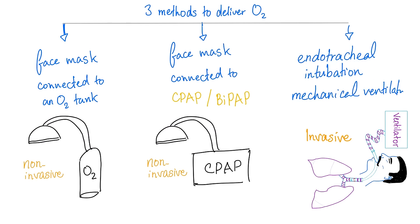First, you have to understand this. There are only three methods to deliver oxygen to a patient. Two of them are non-invasive. One of them is invasive. What are the two non-invasive methods? Number one: face mask connected to an oxygen tank or any oxygen source. You put the mask on the patient's nose and the patient breathes in and out. But the patient is doing the heavy lifting — the work of breathing. It's not the machine; it's the patient sucking the air in and out.